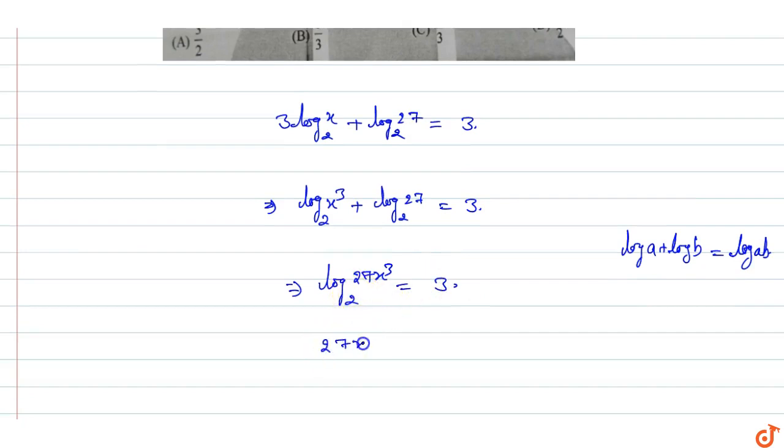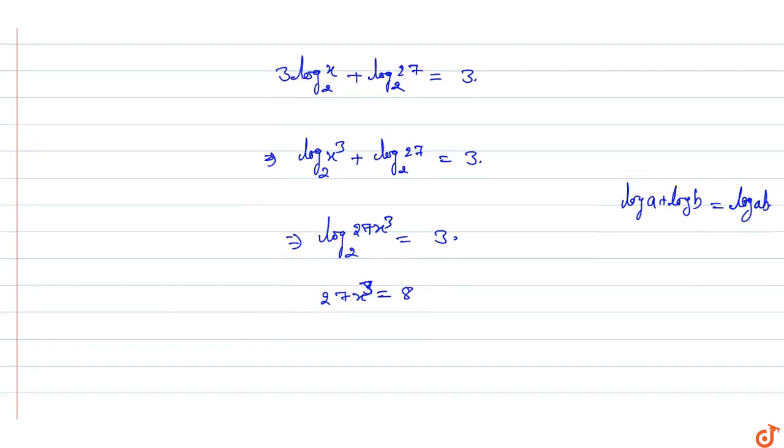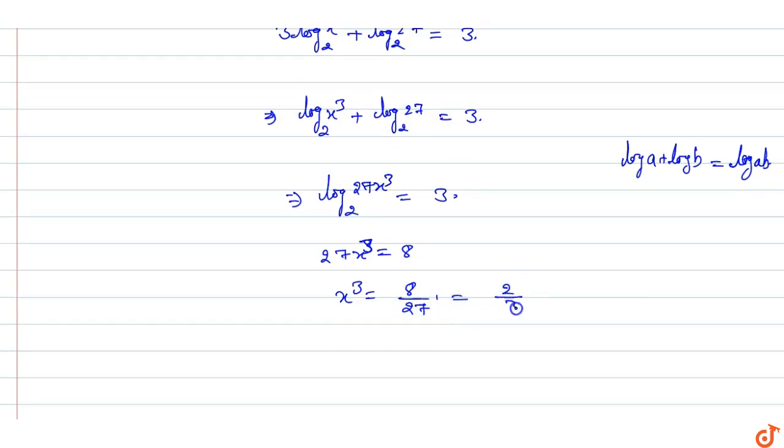This means 27 x cube is equal to 2 raised to power 3, which is 8. So x cube equals 8 by 27.